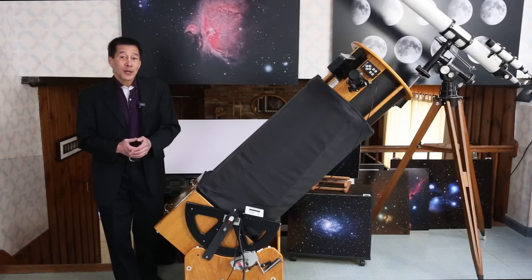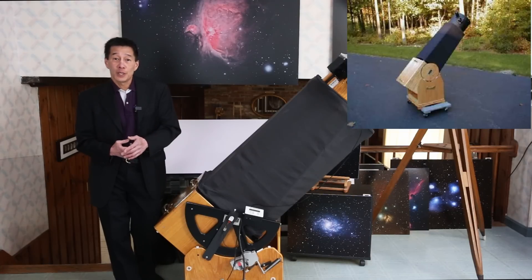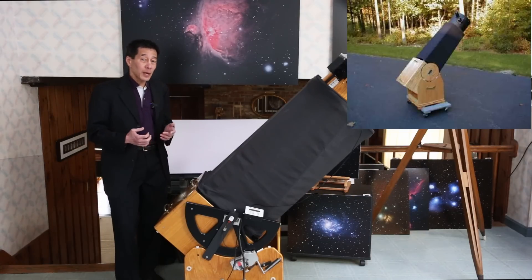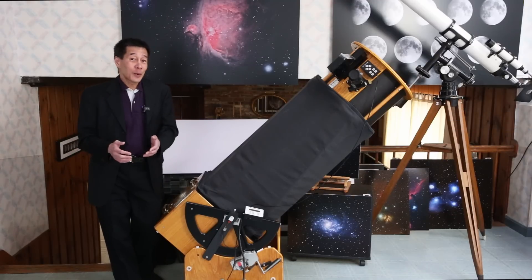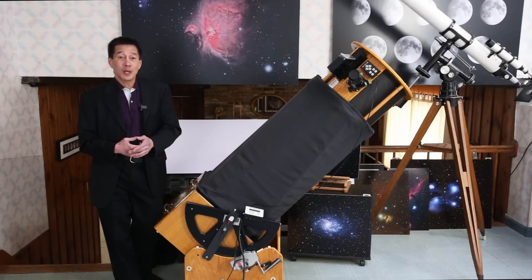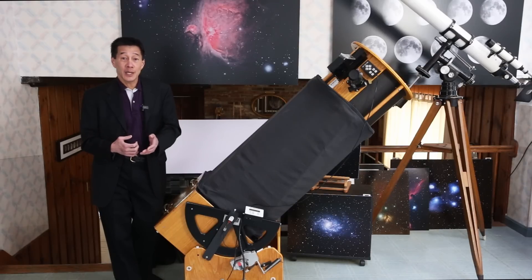So I wound up buying Rick's show demo of the 10-inch EL—that's the extra light version—10-inch F6 Dobsonian reflector. And my friend, who had already bought the 20-inch Obsession, wound up buying Rick's show demo sample of the 12.5-inch EL.